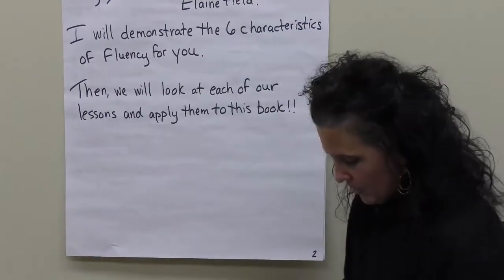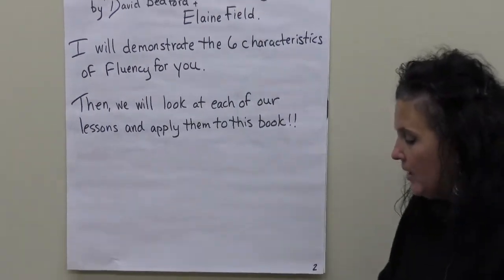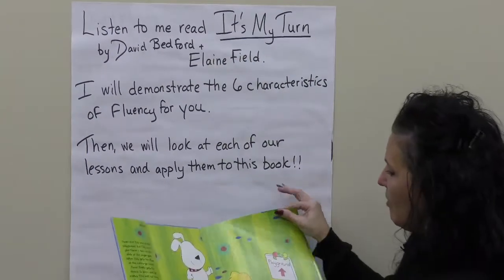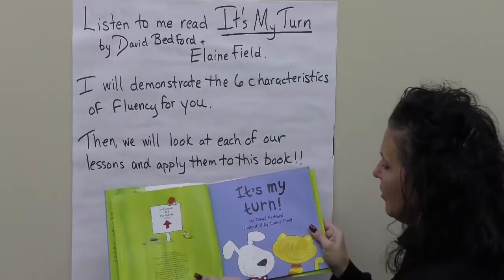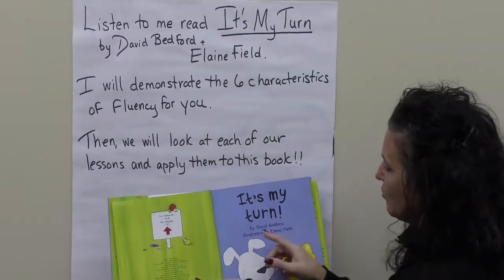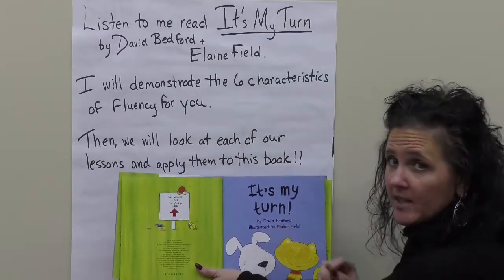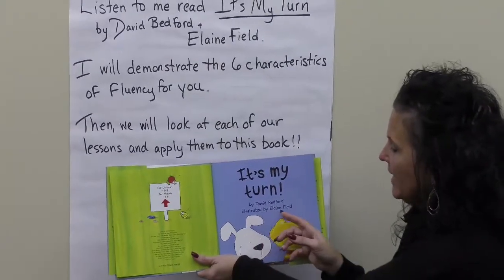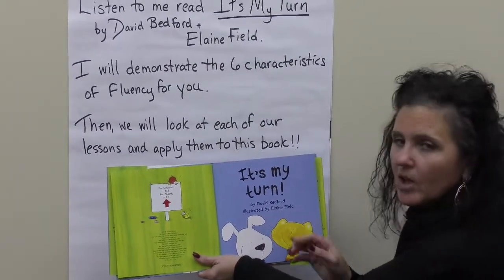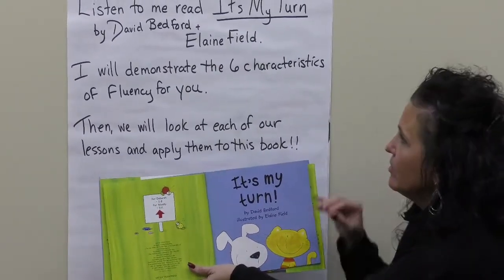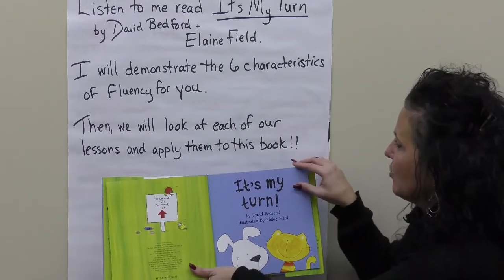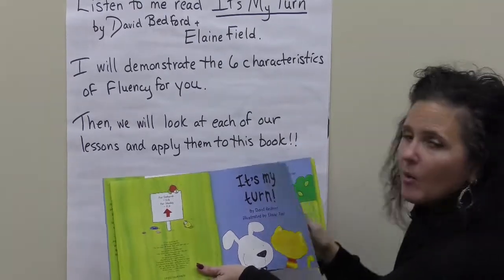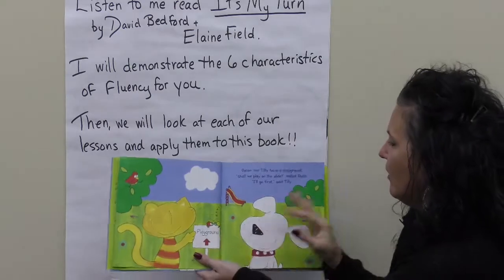Today we're going to read this book called It's My Turn. Remember we talked in the last lesson — it's by David Bedford, the gentleman who wrote it, and it's illustrated by Elaine Field, the lady who drew the pictures. So we're going to look at the six characteristics of fluency and then apply all of our lessons together.